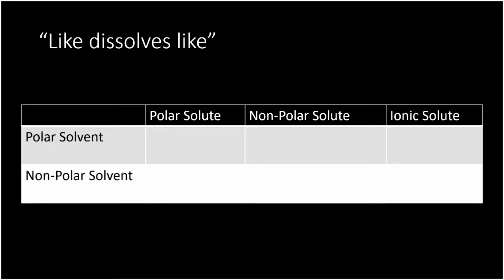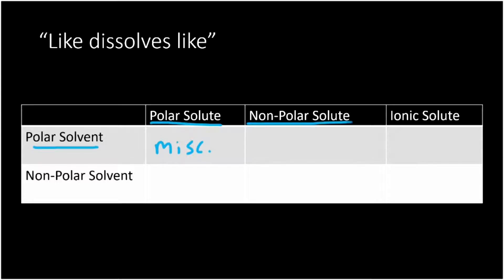Let's start with a polar solvent and a polar solute. We already looked at an example like that: the acetic acid and water situation had a polar solvent — water — and a polar solute — acetic acid — and we saw that they were miscible. So whenever we combine two things that are polar like that, we get something that is miscible. Now if we go to a nonpolar solute mixing with a polar solvent — just like oil and water — that's going to be immiscible.